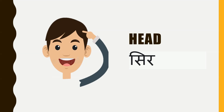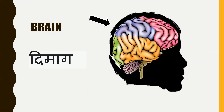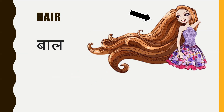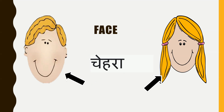The first one is head. What do we call head in Hindi? Sir. Then brain, and it is called dimag in Hindi. Hair — in Hindi, they are called baal. Face, and in Hindi, it is chehra.